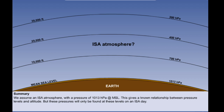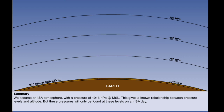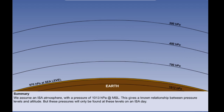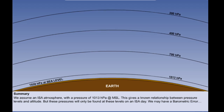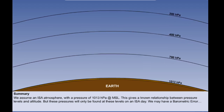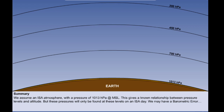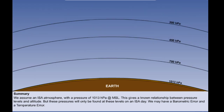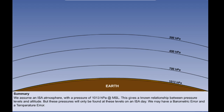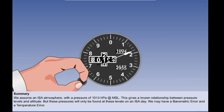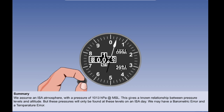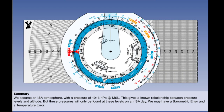We said that ISA was only a datum atmosphere for calibration purposes and was unlikely to be encountered on any actual day. On a real day, the sea level pressure may not be 1013, in which case we have a barometric error, and the temperature distribution may not be according to ISA, in which case we have a temperature error. We therefore have to set our altimeter to a known datum pressure and, if necessary, correct for temperature error. However, if we are high enough to be clear of obstructions, we are not interested in our true altitude — it is more important to have vertical separation from other aircraft. We therefore set 1013 and fly flight levels.